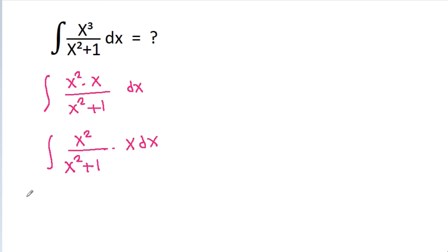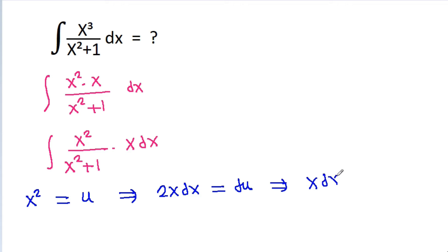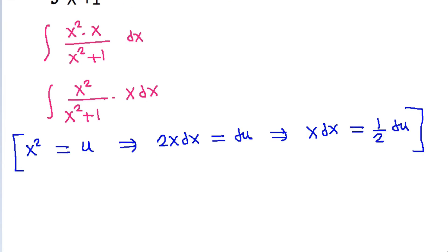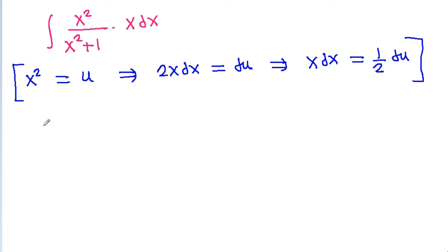If we take x square equal to u, then 2x dx will be equal to du, and x dx will be equal to 1 by 2 du. So it becomes the integral of u divided by u plus 1, times 1 by 2 du.